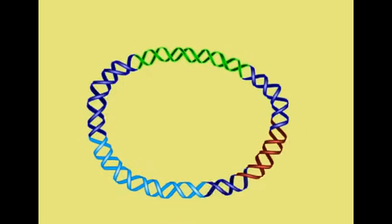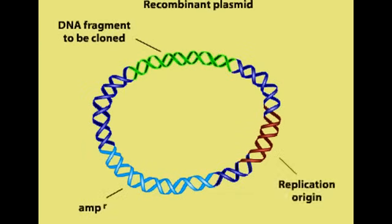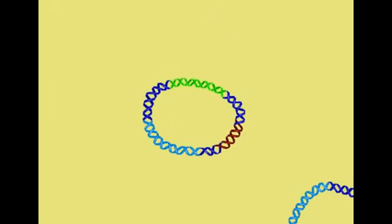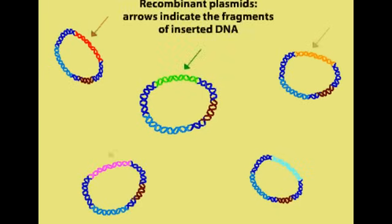Each of these recombinant plasmids contains the inserted DNA fragment, an ampicillin resistance gene, and a replication origin. A pool or library of circular recombinant plasmids is thus created. Each plasmid carries a unique fragment of foreign DNA, as indicated by the colored arrows.